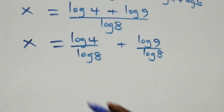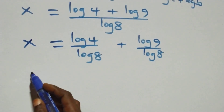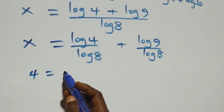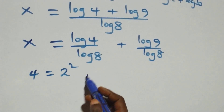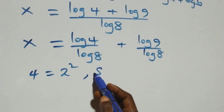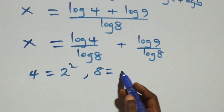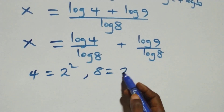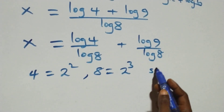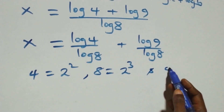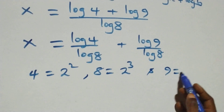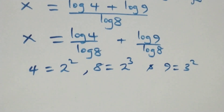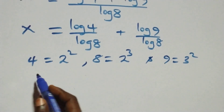4 can be written as 2 times 2, which is 2 squared. 8 can be written as 2 times 2 times 2, which is 2 cubed. And 9 can be written as 3 times 3, which is 3 squared.